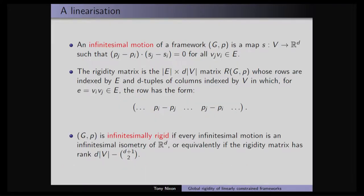Ileana explained this nicely: an infinitesimal motion is a vector assigning instantaneous velocities to your vertices, which satisfies a dot product condition. This gives you a system of linear equations, and you can form the matrix of coefficients of this system — that's the rigidity matrix. The framework is infinitesimally rigid either if the only infinitesimal motions come from isometry — infinitesimal translations, rotations, or reflections — or equivalently, if this matrix has the right rank, which is the number of columns minus the dimension of the Lie group of isometries.